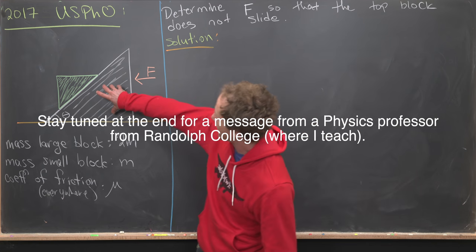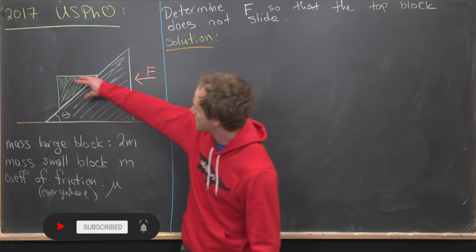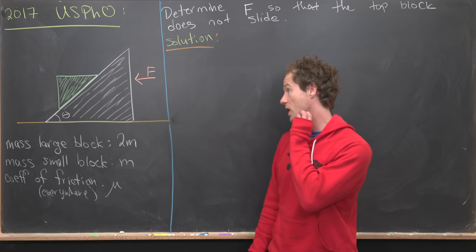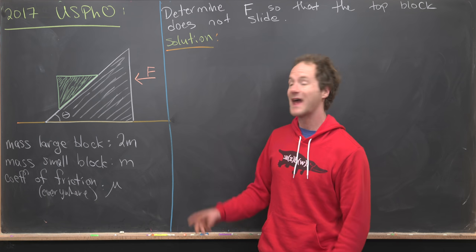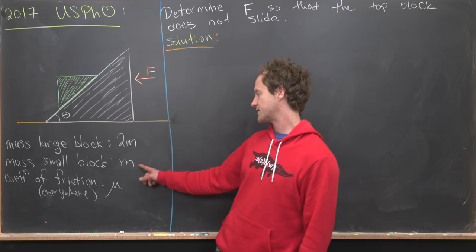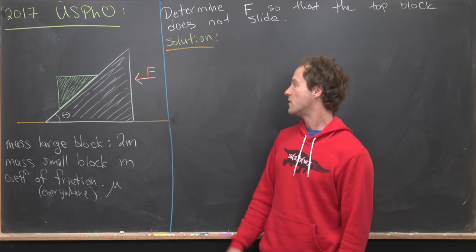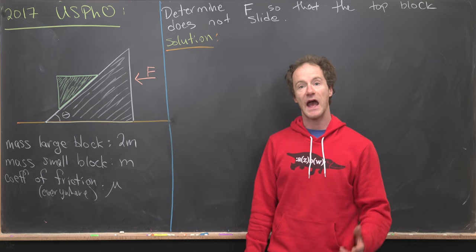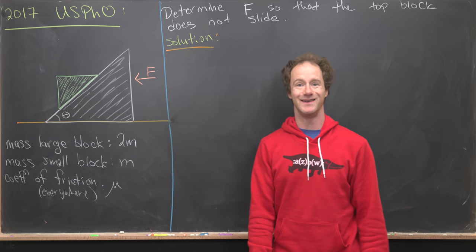Here's the setup. We've got a triangular block sitting on the ground, and the angle of the block is given by theta. Resting on top of that block we have another triangular block with the same angle — it's a similar triangle, as we can see from the horizontal line segment. The mass of the large block is 2m, the mass of the small block is m, and the coefficient of friction everywhere in this system is given by mu. Furthermore, we're pushing this whole system to the left, so a force is being applied in that direction.